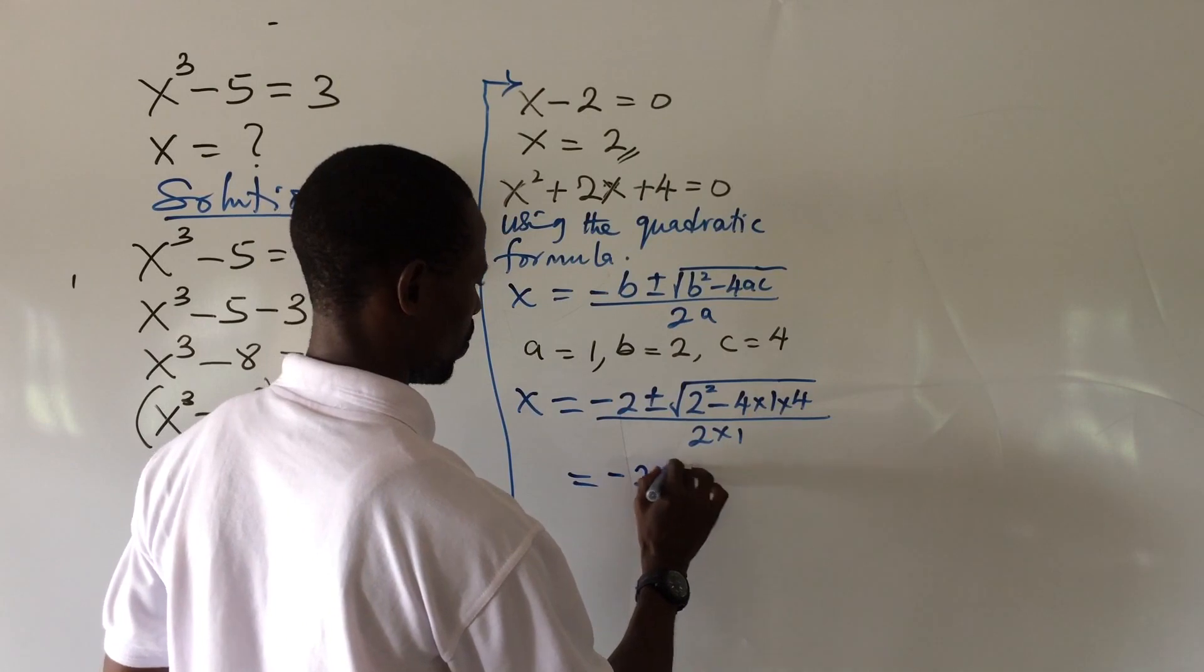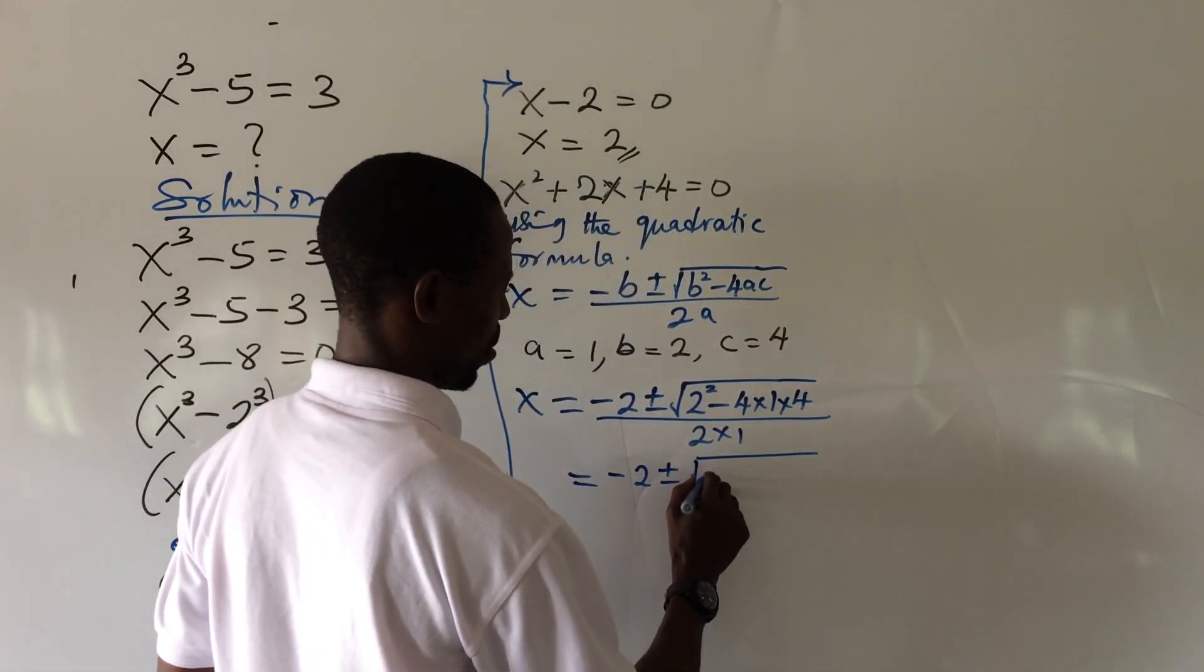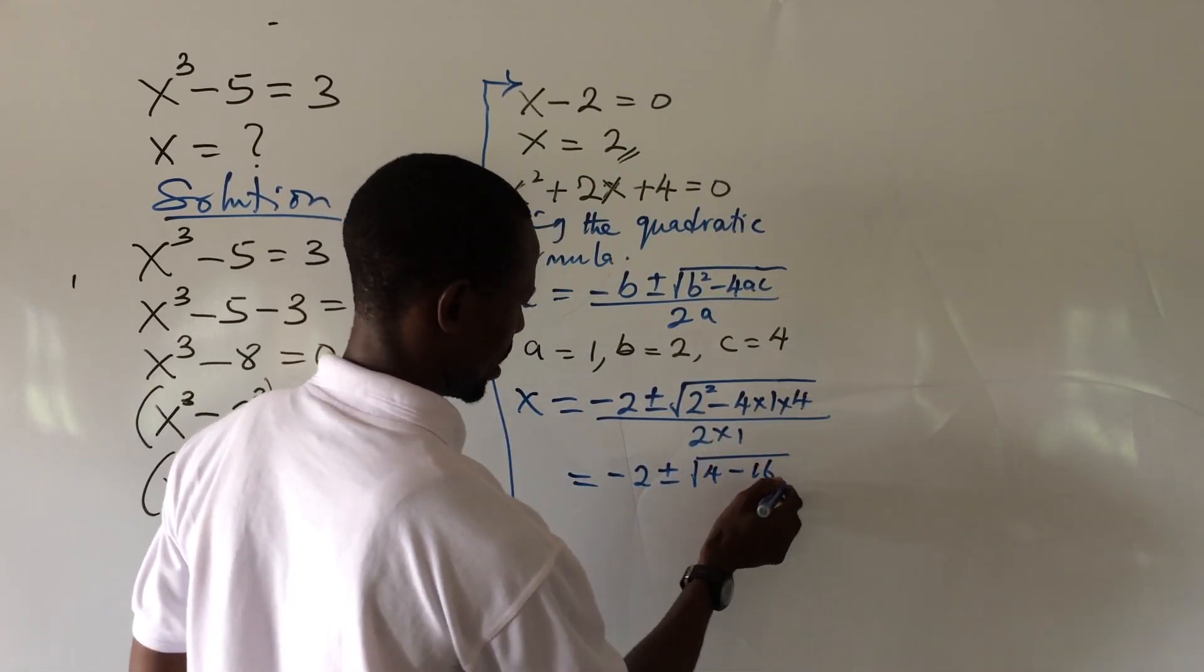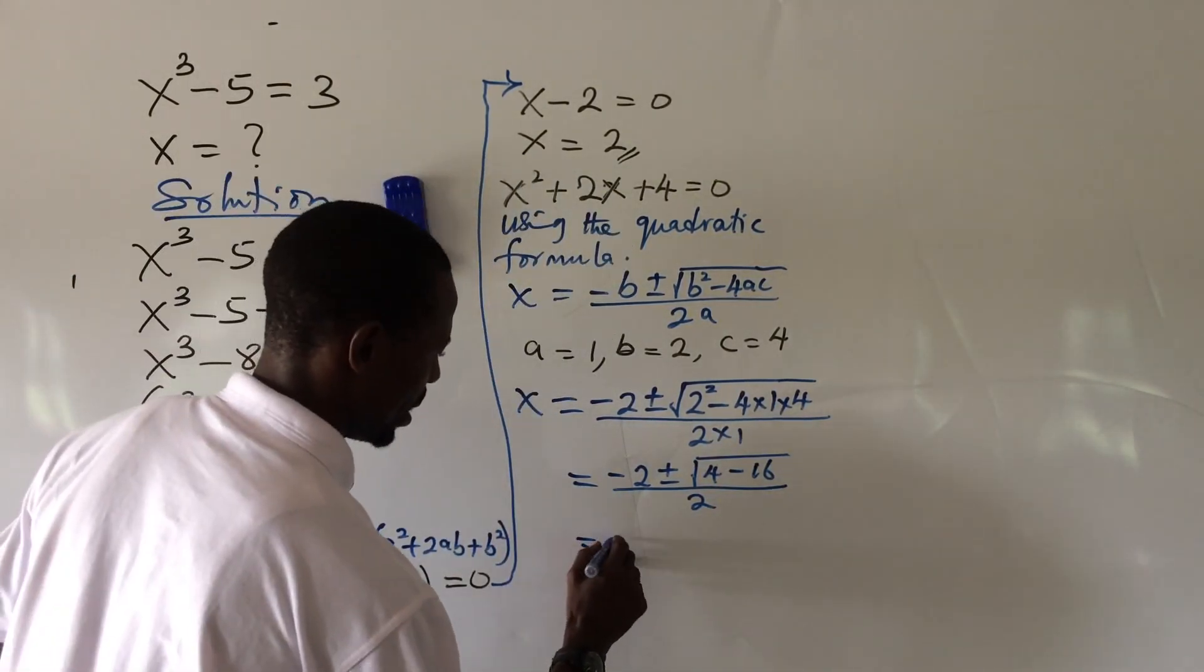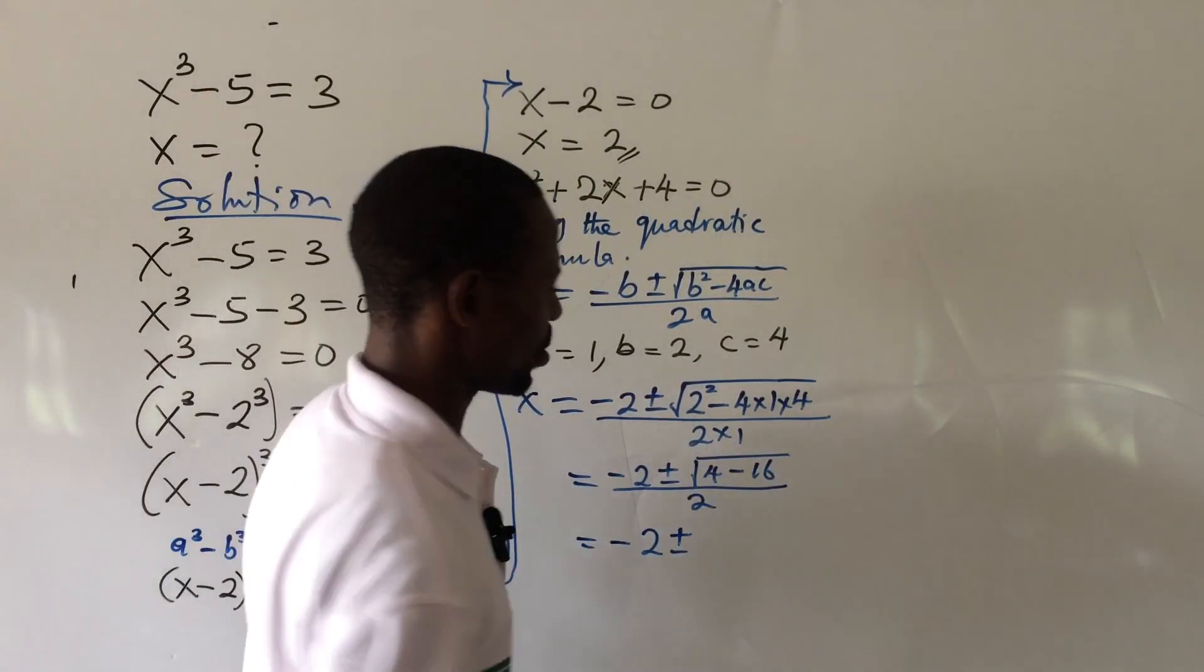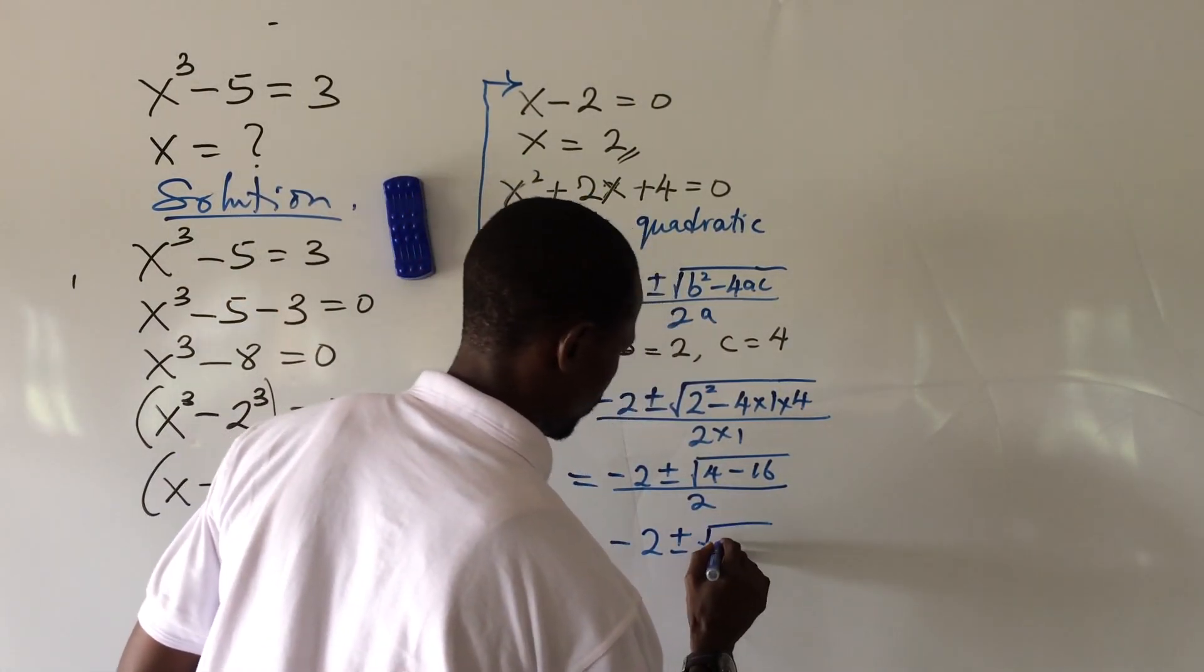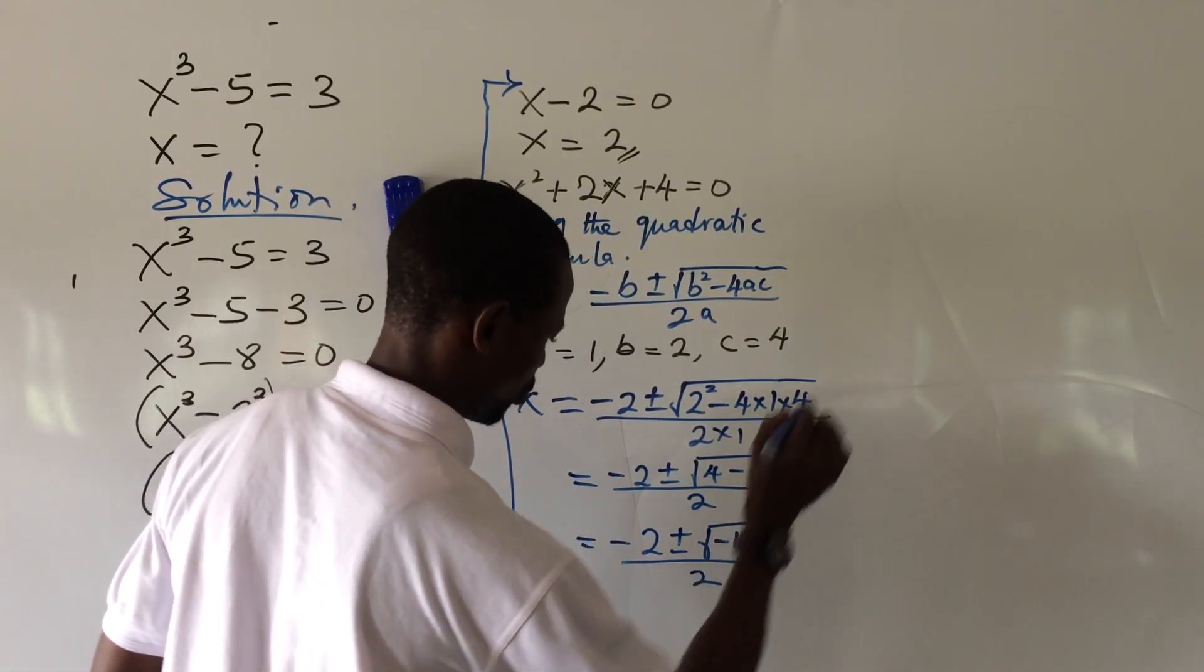So let's break this down. This will give us minus 2 plus minus... minus 4 times 1 times 4 will give us 16, all over 2. Let's go ahead. This will now give us minus 2 plus minus 4 minus 16 will give us minus 12, so you'll have square root of minus 12 all over 2.